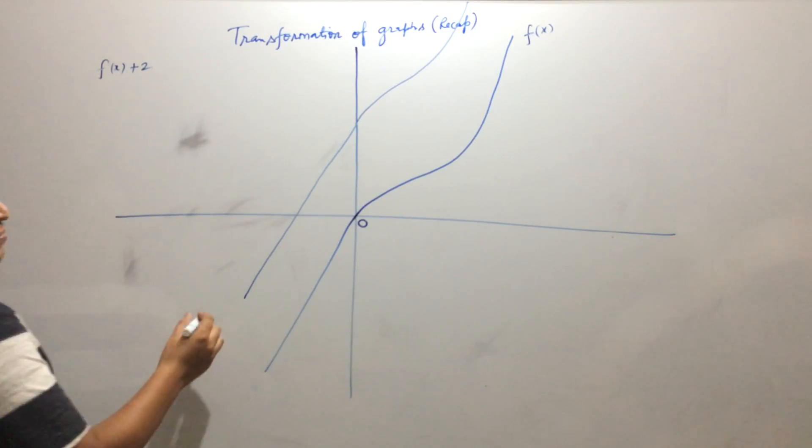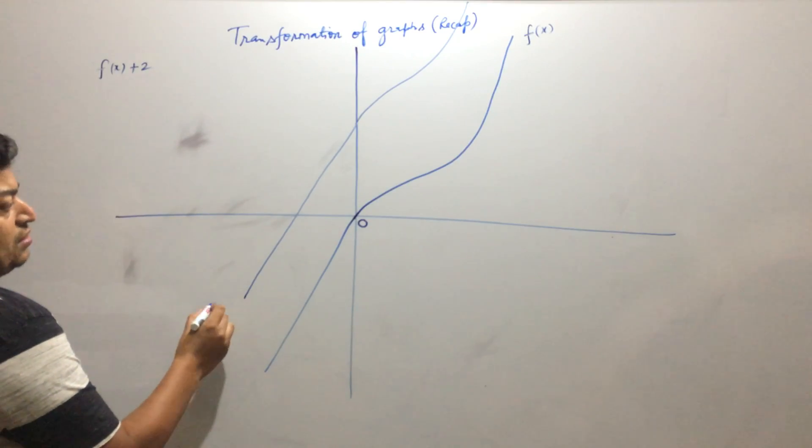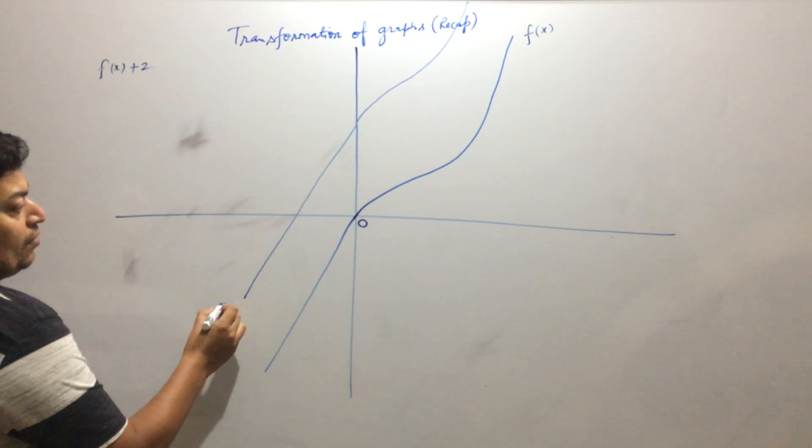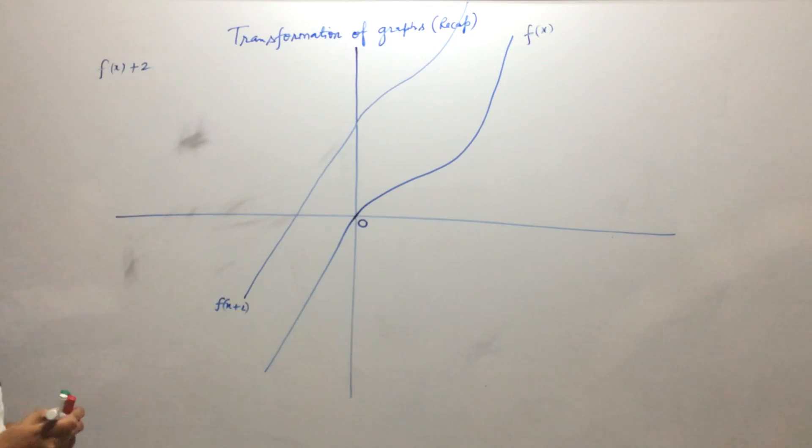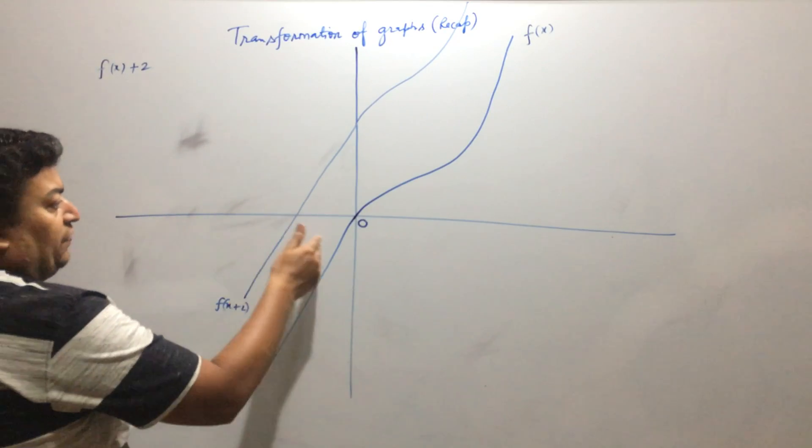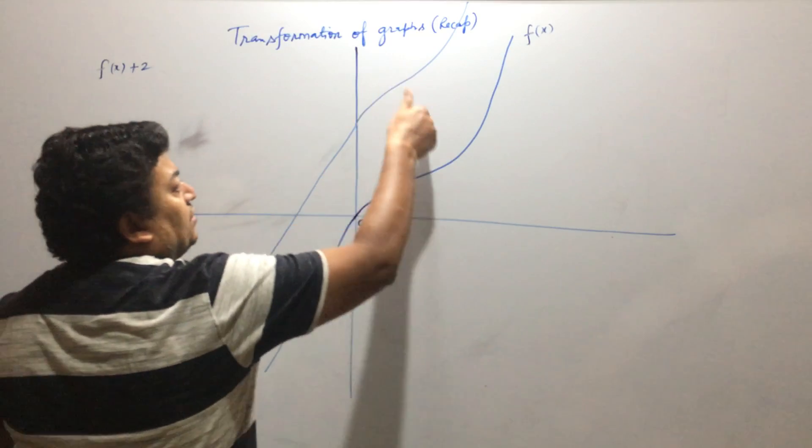Okay, so this will be f of x plus 2. You can see that each and every point of the graph is shifted 2 units upward.